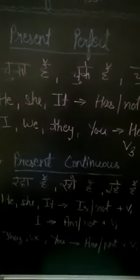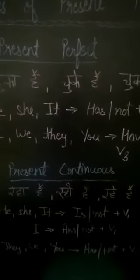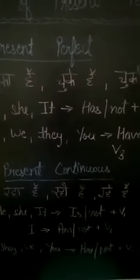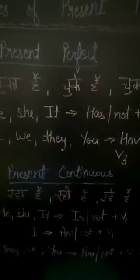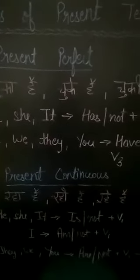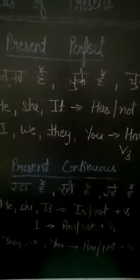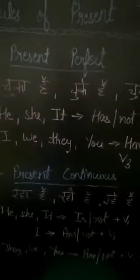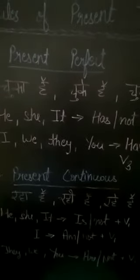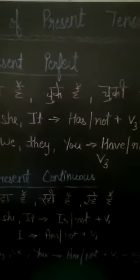The rule for present continuous is: with he, she, it, use 'is' or 'is not' plus the first form of the verb. With I, use 'am' or 'am not' plus the first form of the verb. With they, we, and you, use 'are' or 'are not' plus the first form of the verb, and add '-ing'.